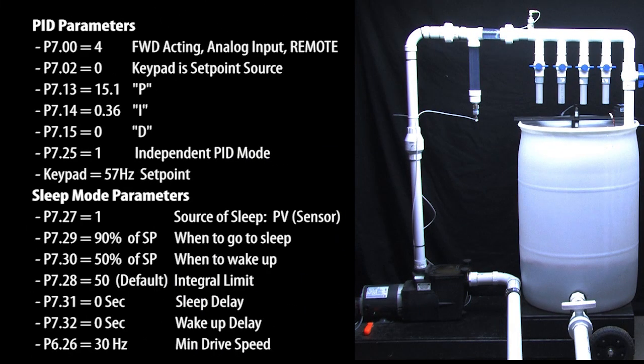To switch from forward to reverse acting, we only need to change these guys. We need to tell PID the sensor signal is reverse acting by setting parameter 7.0 to a 3.